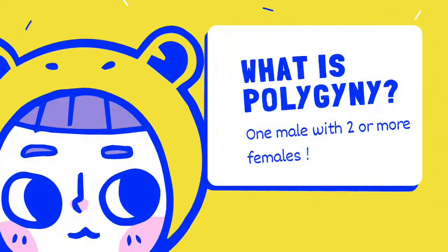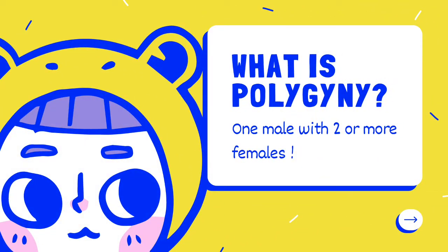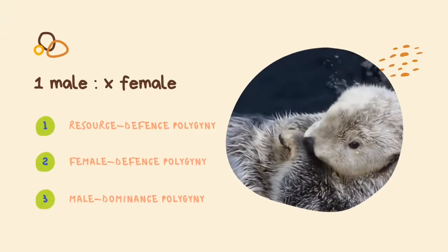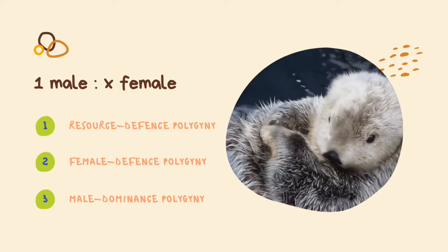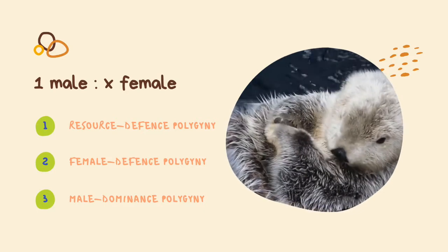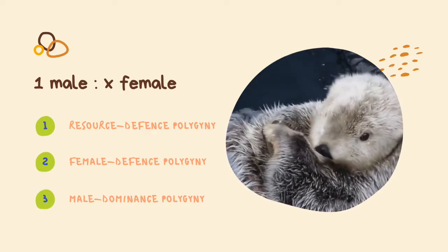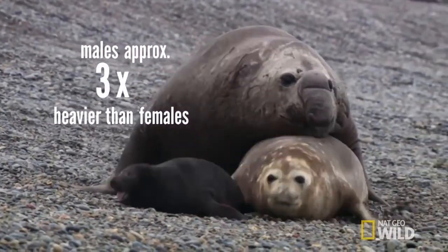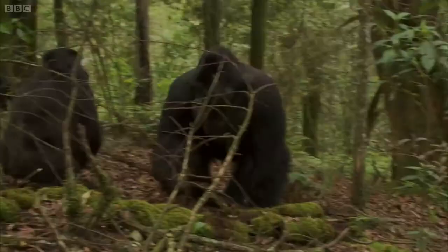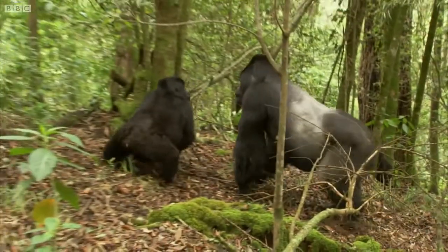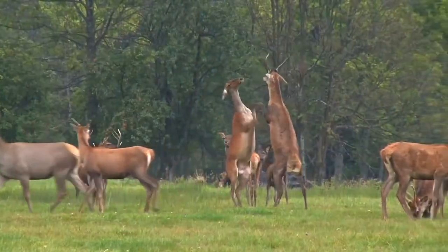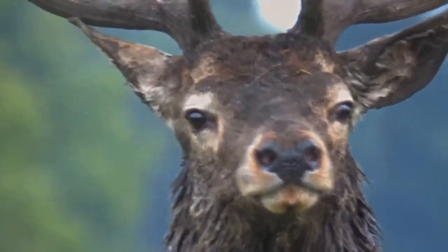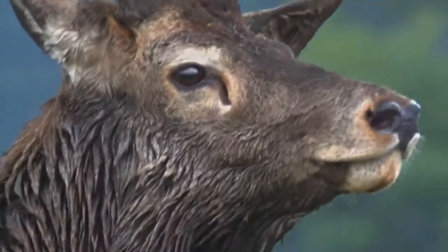What is polygyny? Polygyny is when males control access to more than one female. There are three types of polygyny: resource defense polygyny, female defense polygyny, and male dominance polygyny. Females' choice of male is influenced by quality of male and his territory. Intense competition results among males and there is large variance in male reproductive success. Males display and advertise courtship signals.